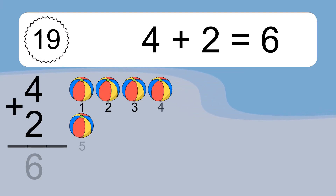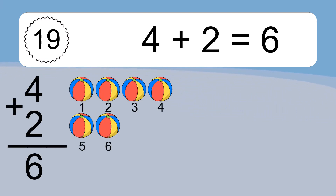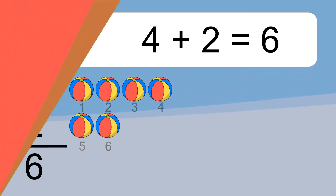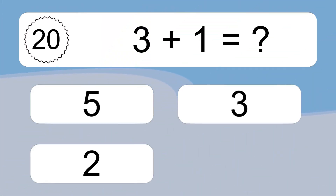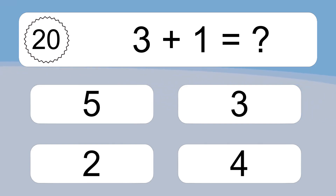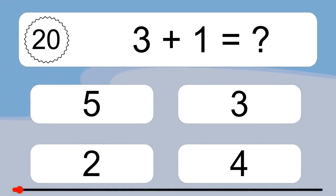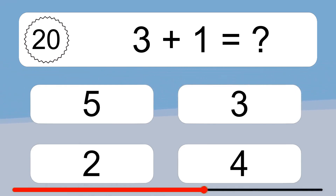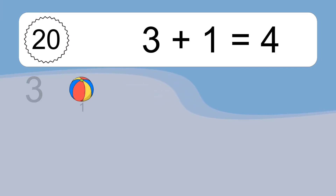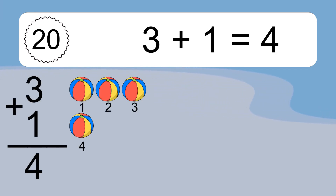Four plus two equals six. Let's count it: one, two, three, four, five, six. Three plus one equals four. Let's count it: one, two, three, four.